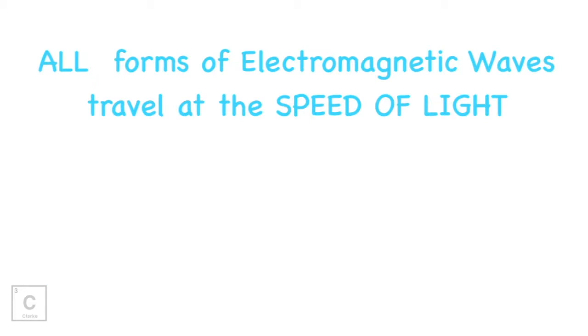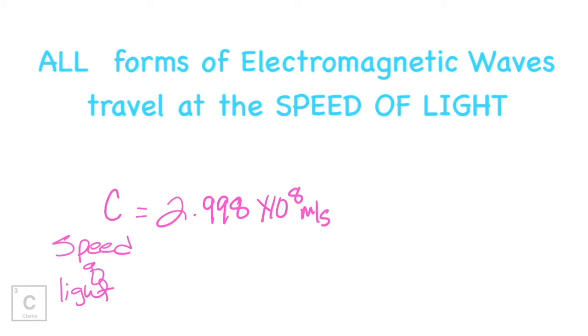All forms of electromagnetic waves travel at the speed of light. It doesn't matter if it's a radio wave or a gamma wave. They are all going to travel at the speed of light. Let's define the speed of light. We use lowercase c. That's the symbol for speed of light. And the speed of light is 2.998 times 10 to the 8 meters per second. You may be doing calculations with the speed of light as you travel deeper into this unit.